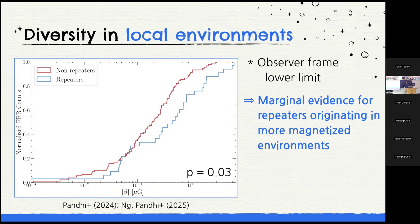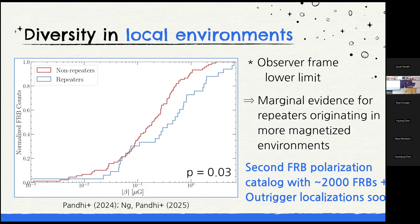The most exciting result is comparing the magnetic field strength of non-repeating FRBs (in red) versus repeating FRBs (in blue). We find evidence suggesting that repeating FRBs originate in more highly magnetized environments than non-repeating FRBs. This suggests not just diversity but potentially a dichotomy in the types of environments that form FRBs — though this is still tentative. To confirm it, we need far more FRBs. The second polarization catalog will have 2,000 FRBs instead of 128, currently being processed. Additionally, with CHIME outriggers coming online this year, we'll be able to incorporate host galaxy and redshift information for all of these FRBs.